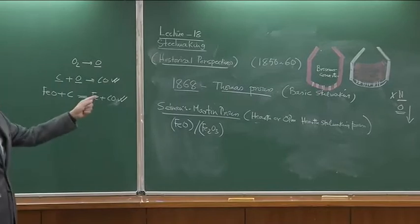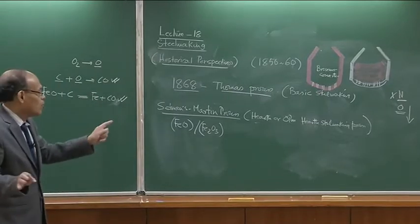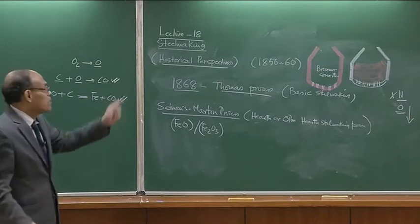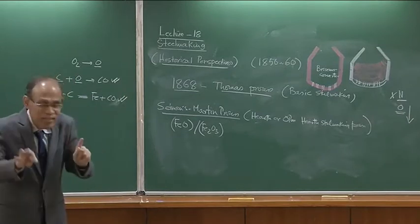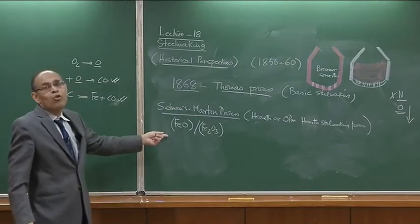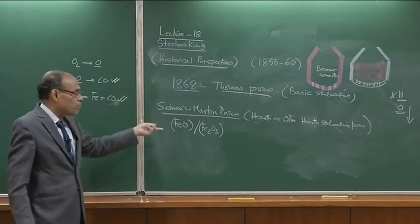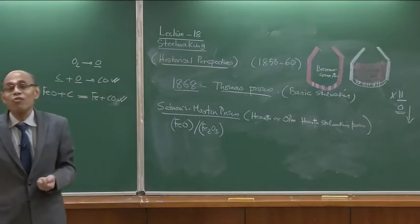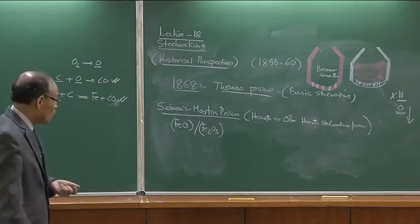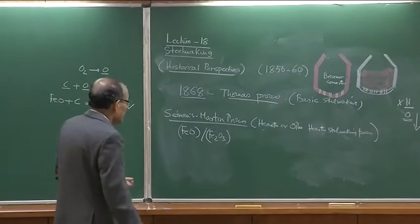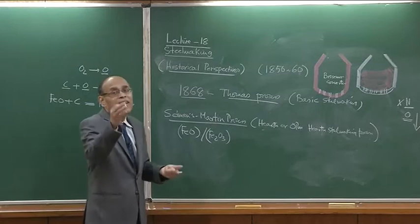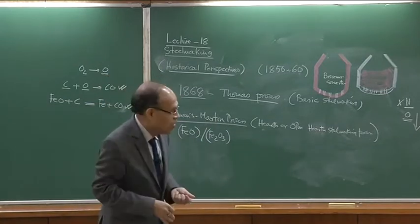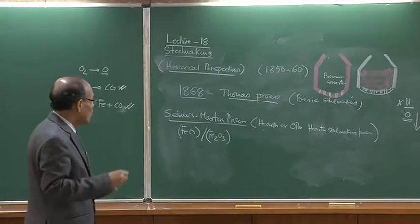We are not very interested in Bessemer and Thomas processes in great detail because they are virtually obsolete. There are only one or two plants producing perhaps 10-30 million tons out of the 1.5 billion tons produced annually globally. I am just trying to tell you the history so you know how the subject really evolved over the years.